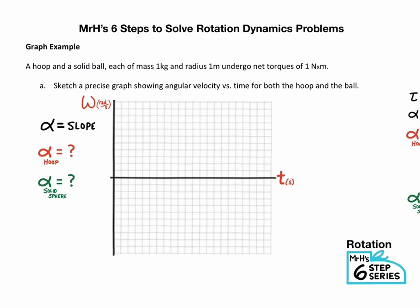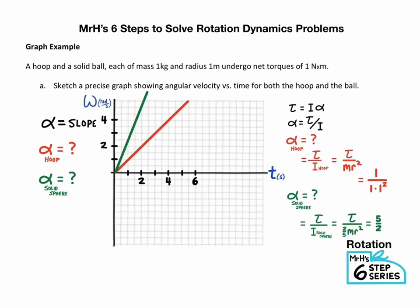The slope would be acceleration, angular acceleration in this case. So if slope is angular acceleration, they're really just asking me for what's the angular acceleration for a hoop and what's the angular acceleration for a solid sphere given a net torque of 1 Newton meter. And if you recall Newton's second law, net torque equals I alpha. And you rewrite that for alpha, you're going to get torque divided by I.